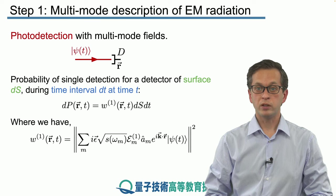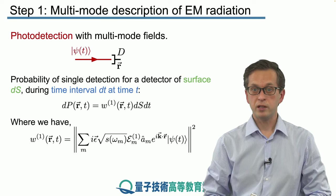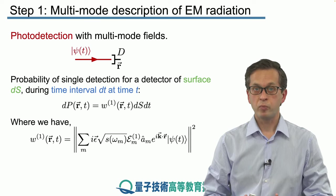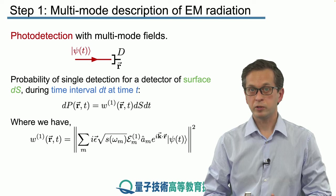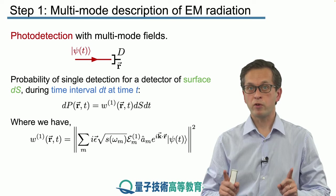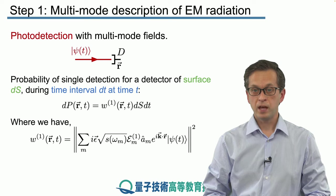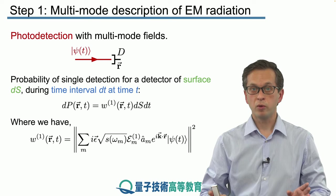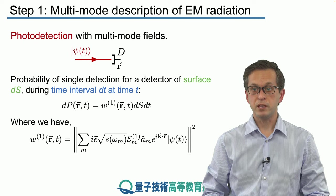It's given by the following expression where we have to compute this function w1. And again, we do it in a very similar fashion, but there are a few key differences. In this case, the operator E+, the positive field component, is a sum over all individual modes m.